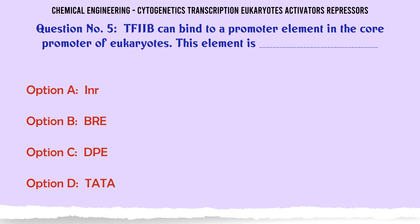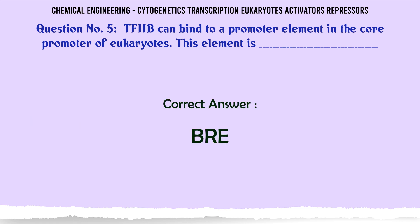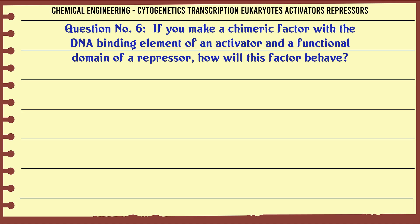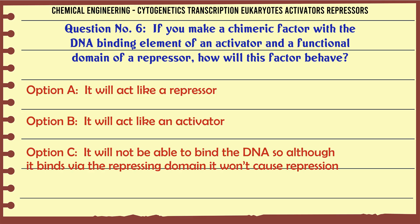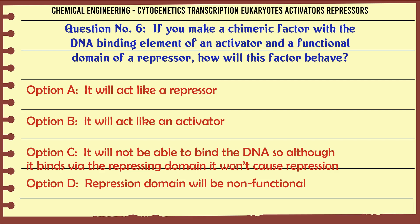TFIIB can bind to a promoter element in the core promoter of eukaryotes. This element is: A. INR. B. BRE. C. DPE. D. TATA. The correct answer is BRE.